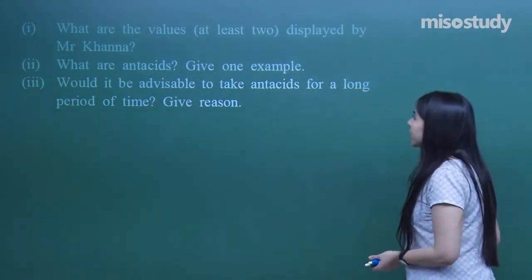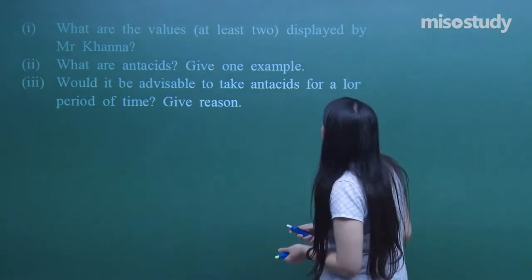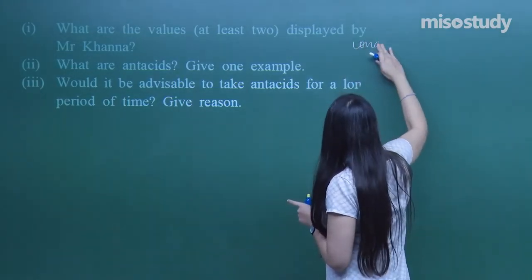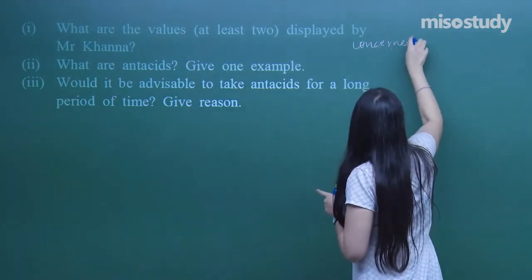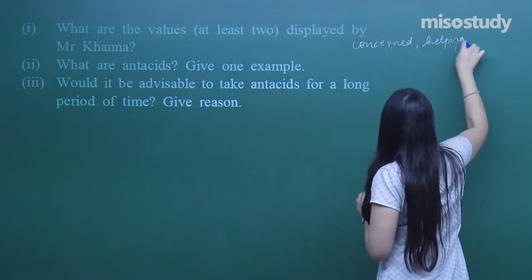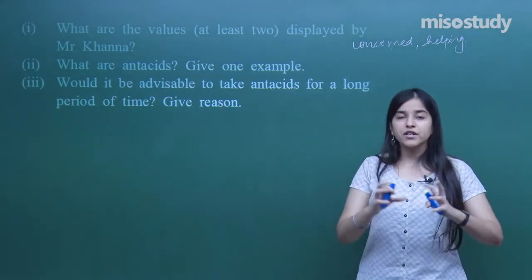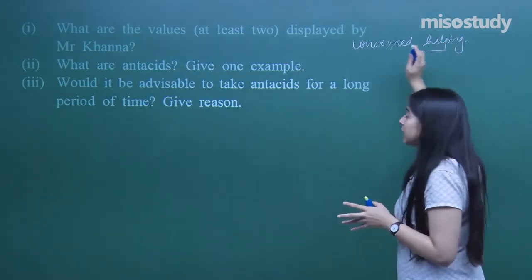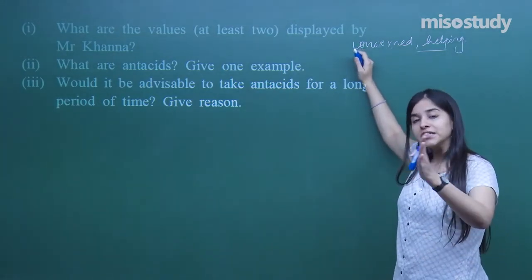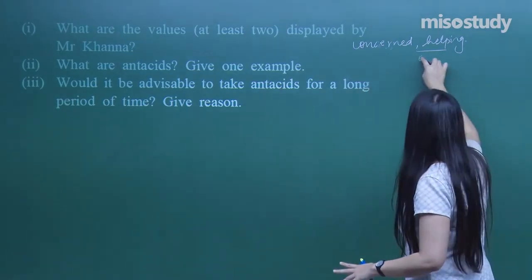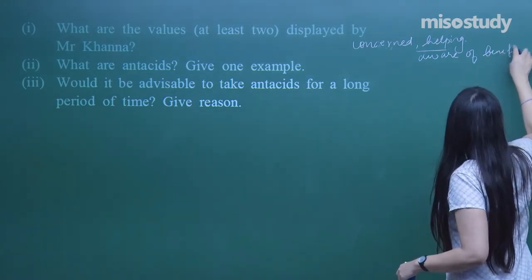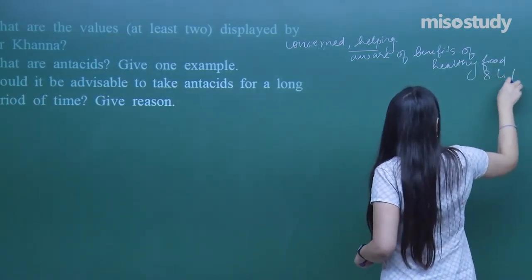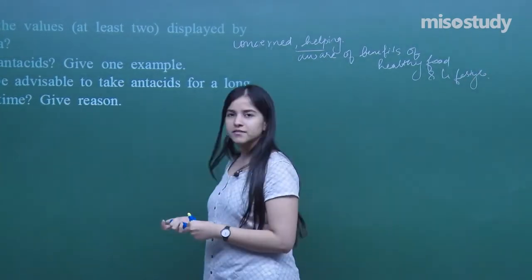What are the values displayed by Mr. Karna? First of all, Mr. Karna was concerned for his friend, he was a concerned person. He was helping, he had got a very helpful nature. And yes, he was aware of the disadvantages of having junk food and not the healthy food lifestyle. He was aware of the benefits of healthy food and lifestyle.